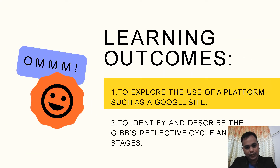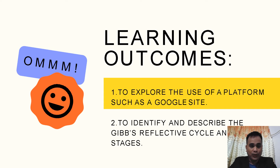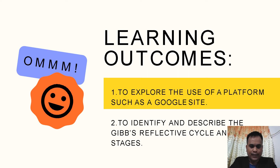To start our discussion, our learning outcomes will focus on exploring the use of a platform such as Google Sites. We're also going to identify and describe the Gibbs Reflective Cycle and its six stages. Particularly in this topic, we will explore an e-portfolio using Google Sites.